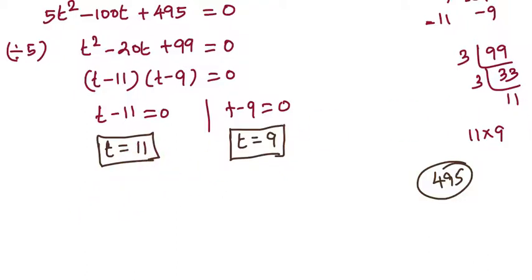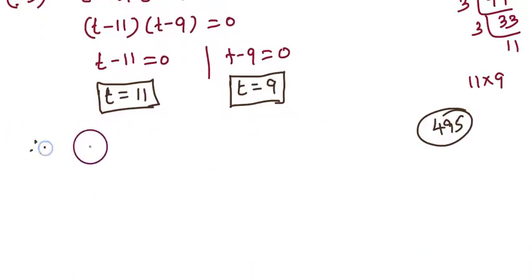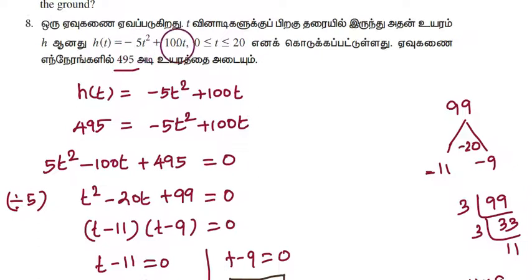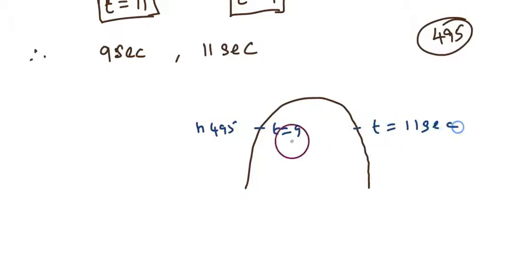The answer is 9 seconds and 11 seconds. At t = 9 seconds, we have 495 feet. That is the answer. Suppose t = 11 seconds, that is also 495 feet.